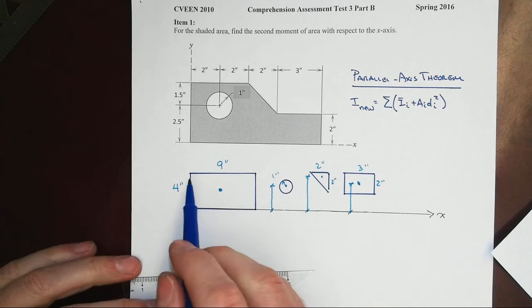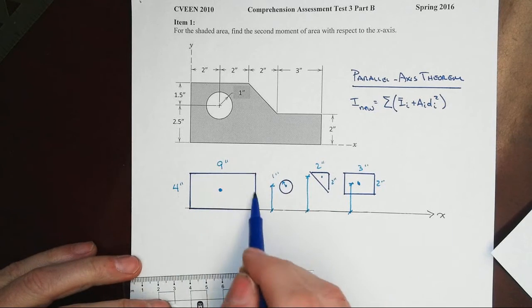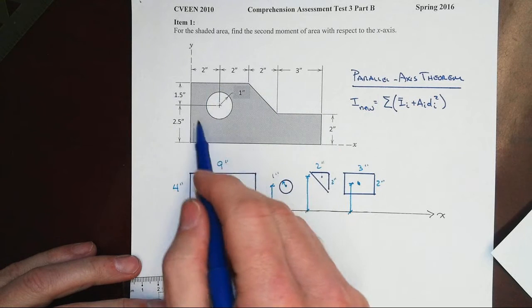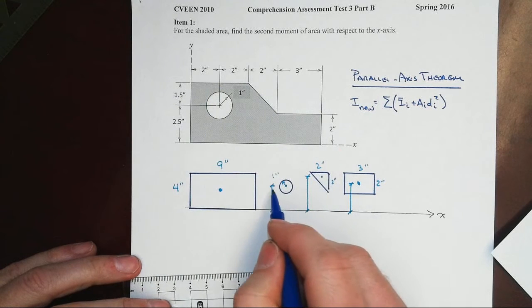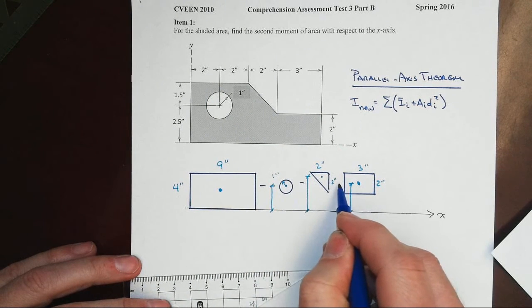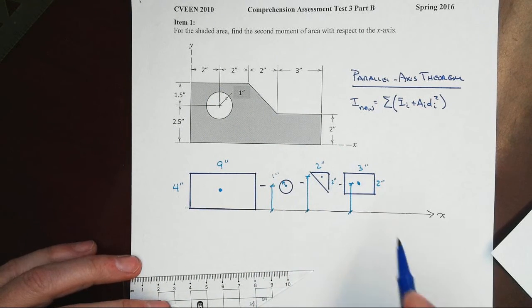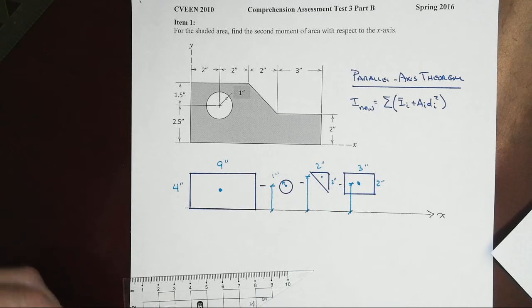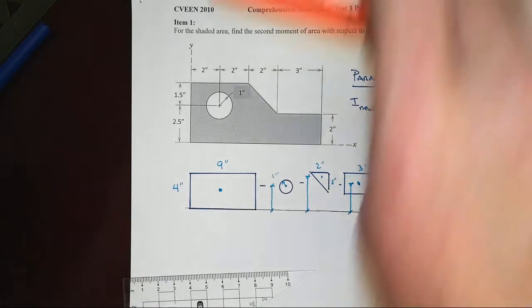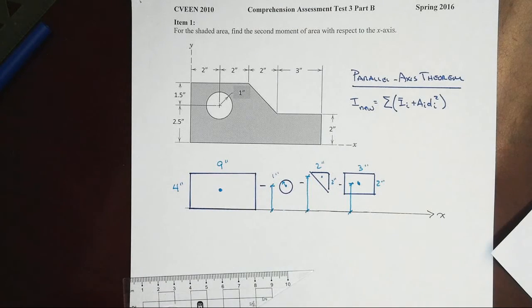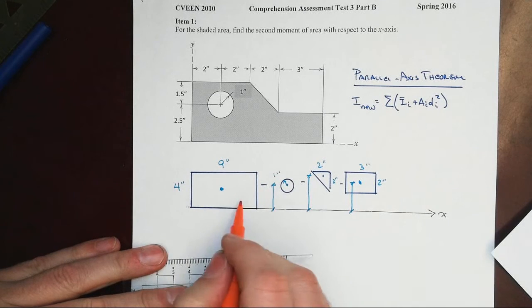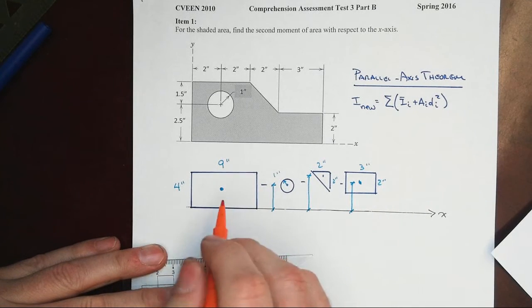We're going to look at this as one big large rectangle going all the way around the entire piece, and then subtract off the circle, the little triangle, and the little rectangle along the way.